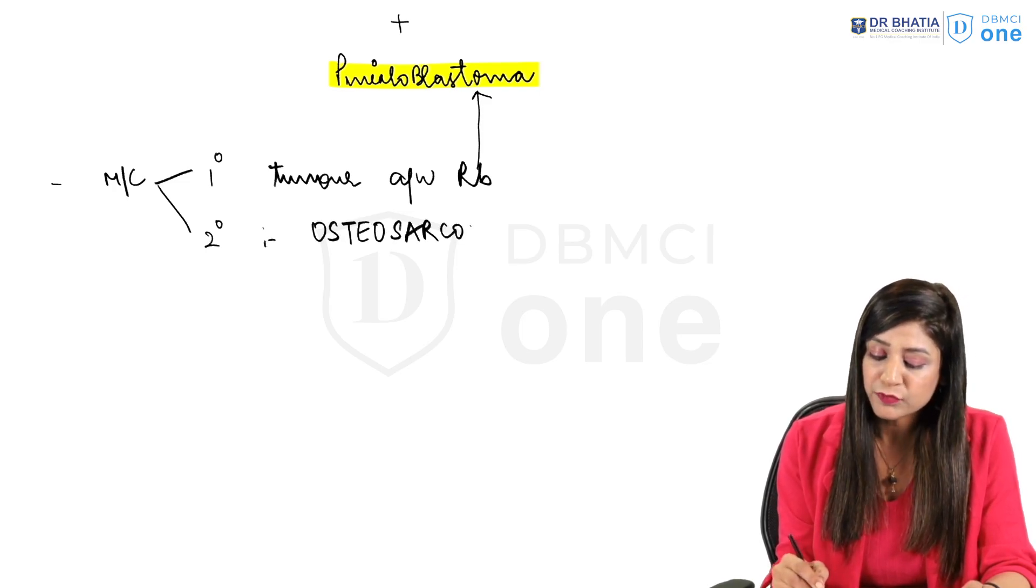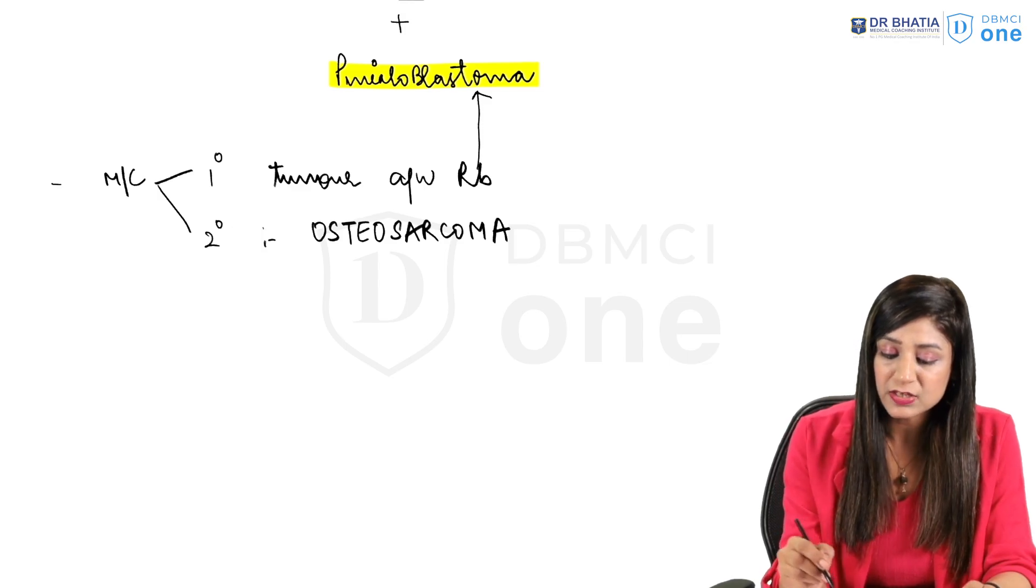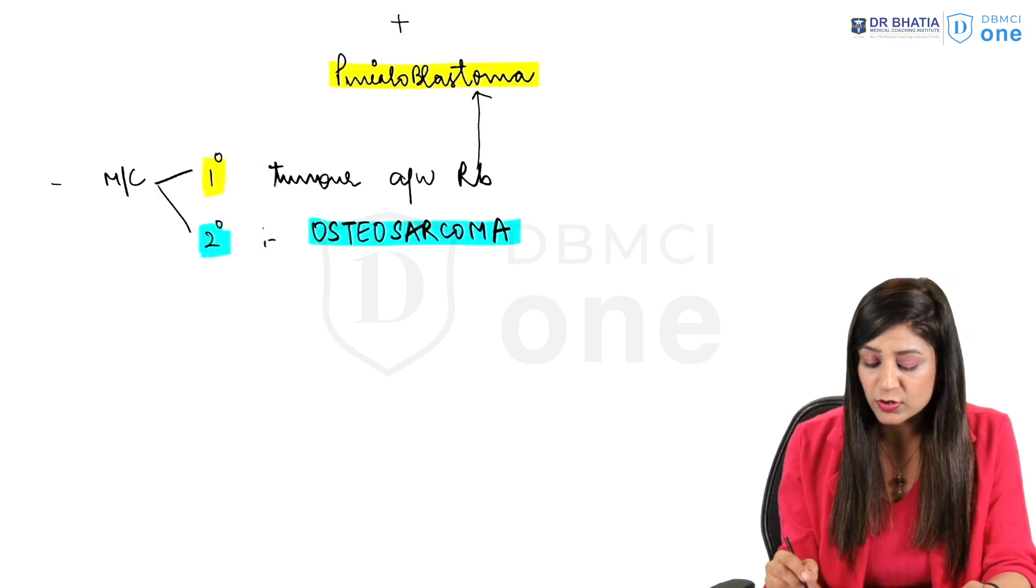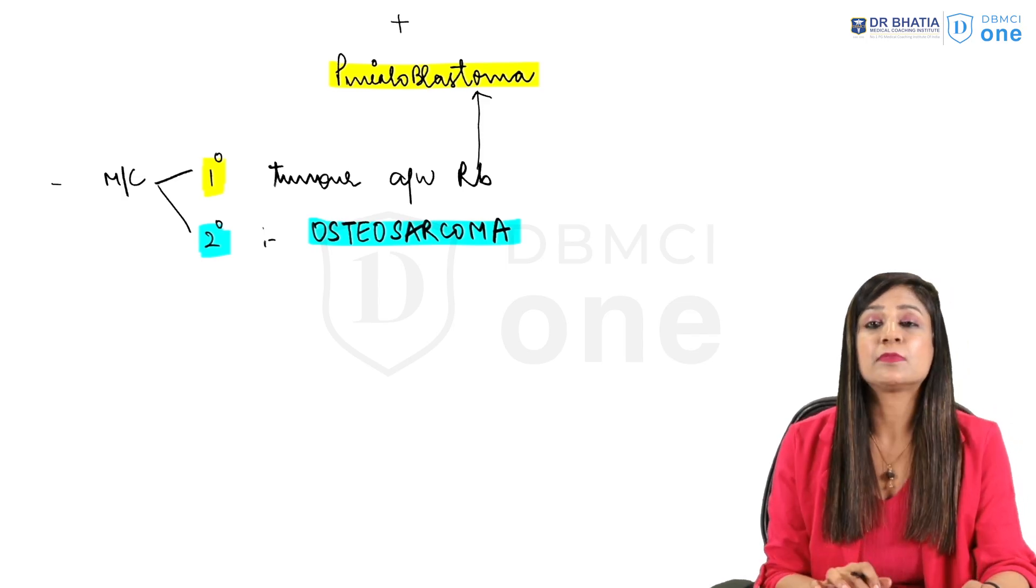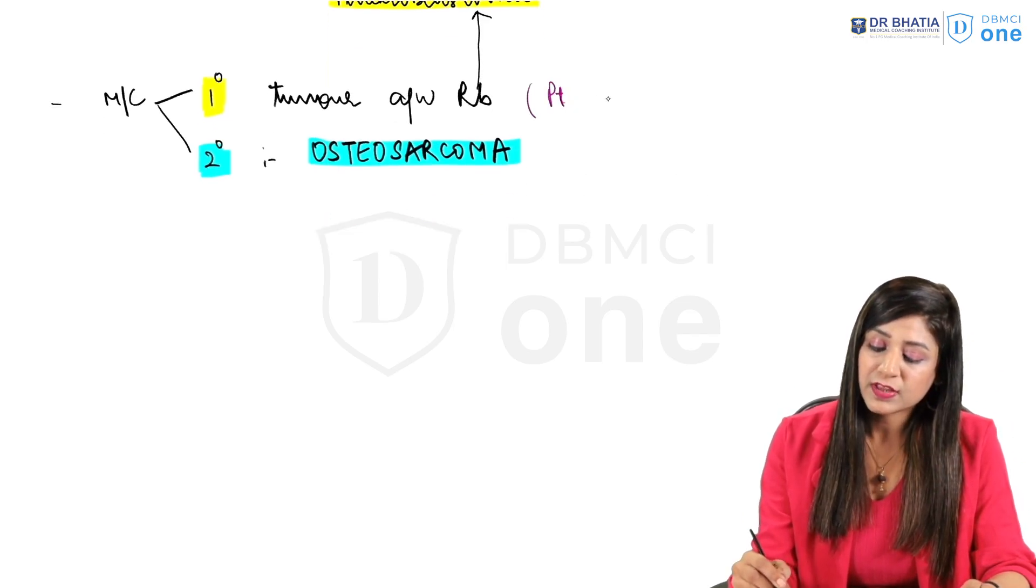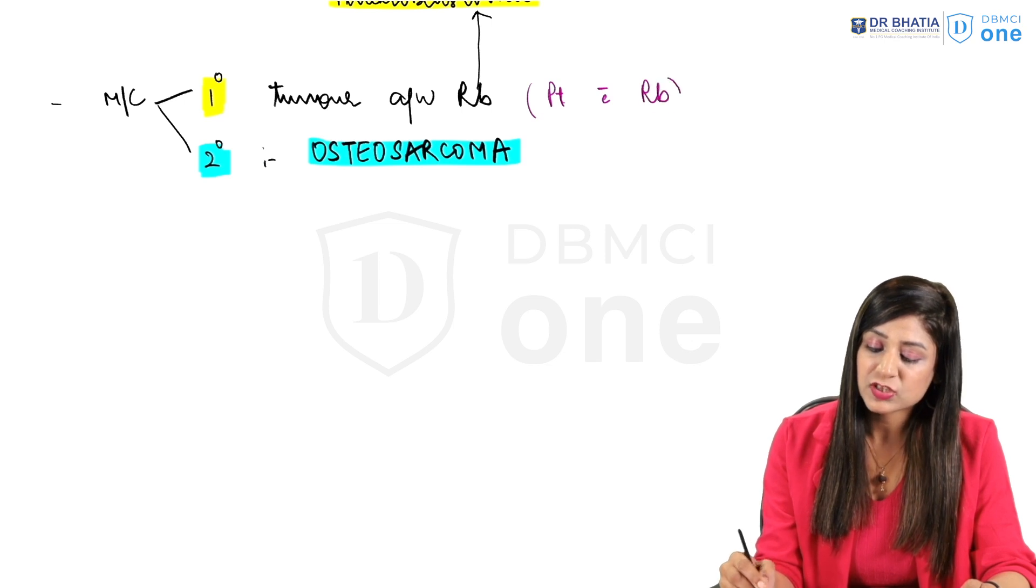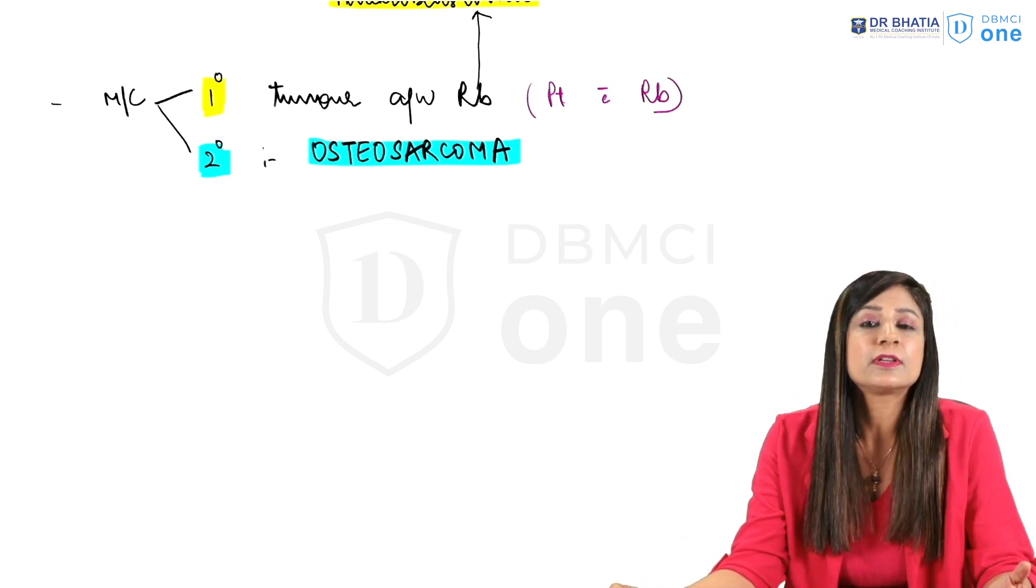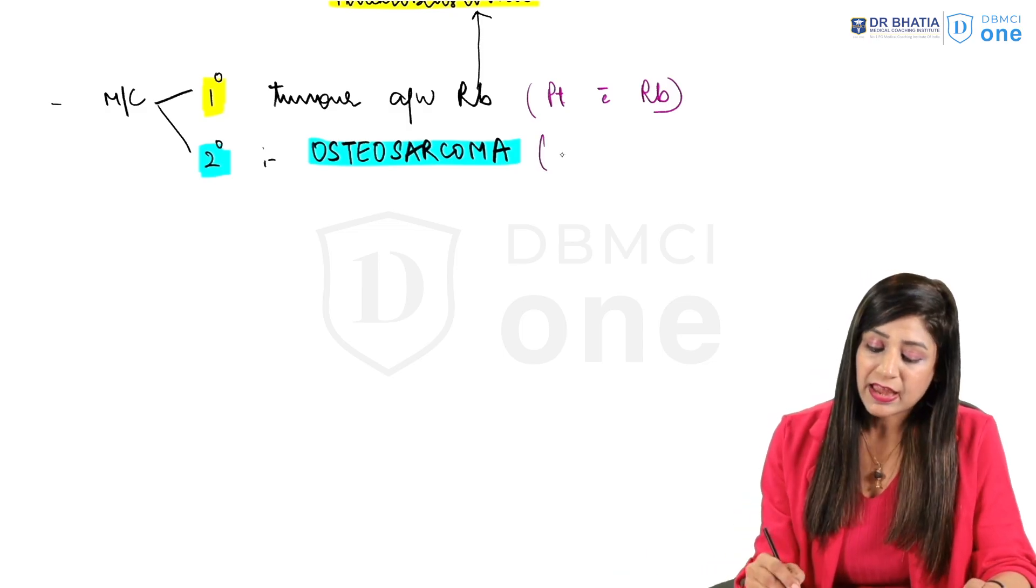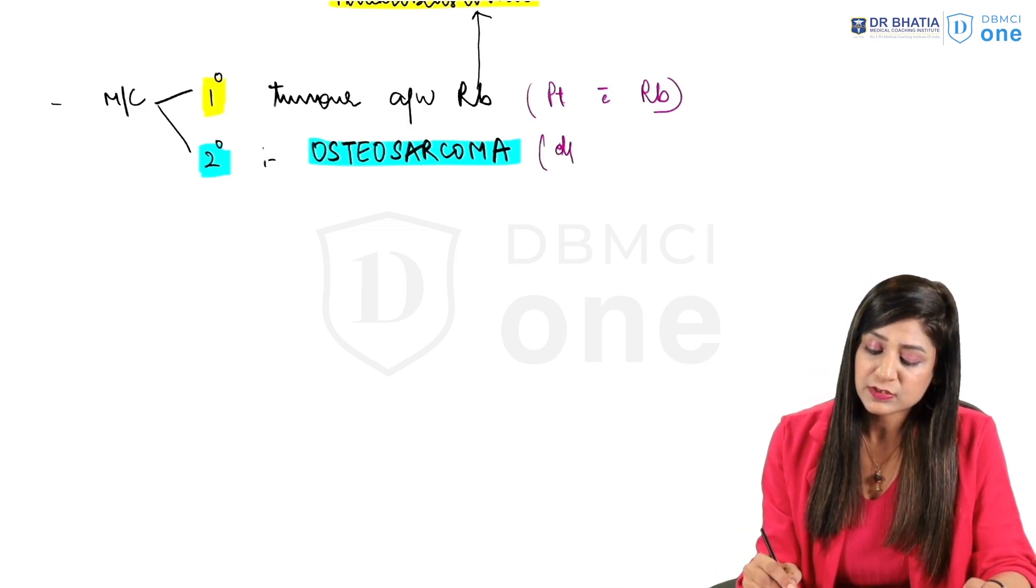You will say what is the difference between the two? The primary tumor is the pinealoblastoma while the secondary tumor is osteosarcoma. When I say primary tumor means the patient with retinoblastoma—if the patient is already having retinoblastoma, what is the most common tumor which can be associated? Then it is pinealoblastoma.